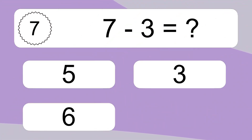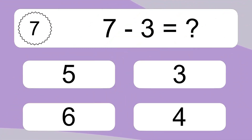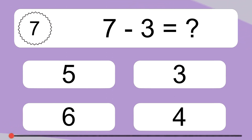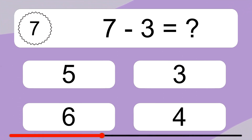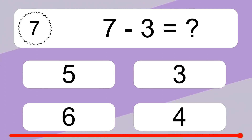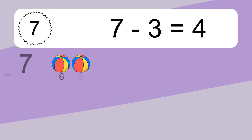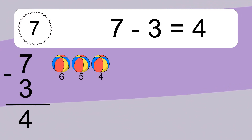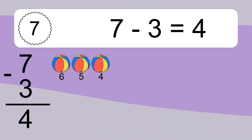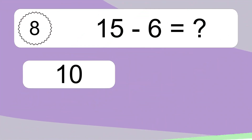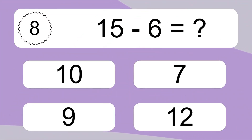7 minus 3 equals what? 7 minus 3 equals 4. Let's count it: 6, 5, 4.